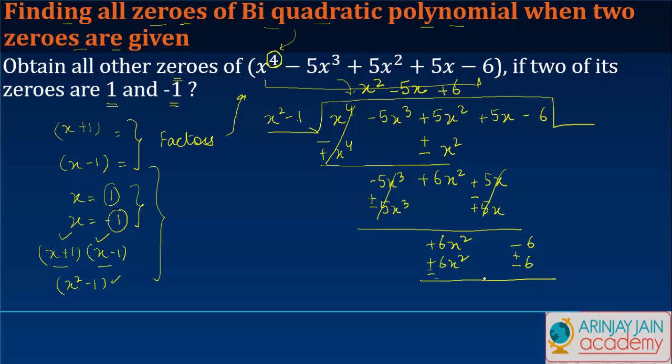This becomes minus, this becomes plus. Knock, knock. So what do I get? I get x^2 - 5x + 6.